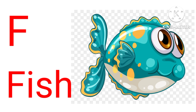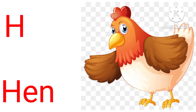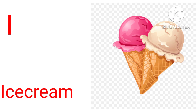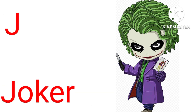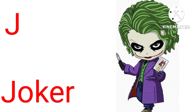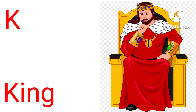F for peace, peace means machli. G for gun, gun means bundu. H for hand, hand means murky. I for ice cream, ice cream means ice cream. J for joker, joker means joker.